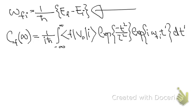Looking at this exponential, it can be written in terms of sine and cosine. The sine part of the expression — sine of omega_fi times t-prime — is an odd function with respect to t-prime equals zero, so it vanishes over the symmetric limits. We are therefore only left with the cosine part of the exponential.